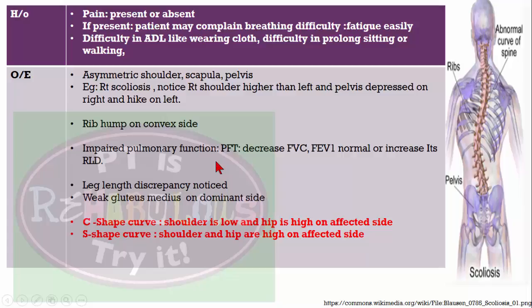In taking history of scoliosis, ask if the patient is having pain. The patient may complain of more fatigue with walking or daily activities, and difficulty in daily living like wearing clothes, prolonged sitting, walking, or standing. As a physical therapist, for a patient with right-side scoliosis, the right shoulder will be high and left shoulder will be low.